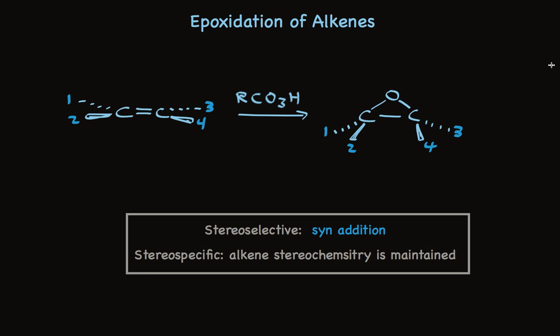So to summarize, alkenes are transformed into epoxides, the reaction is stereoselective, it proceeds with syn addition, and the reaction is stereospecific. The stereochemical relationships of groups attached to the two alkene carbons remain the same with respect to the ring of the epoxide.